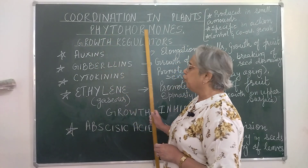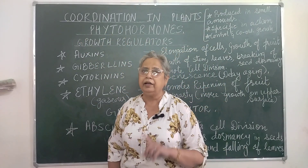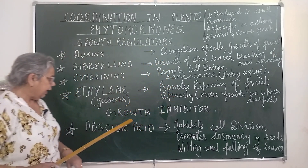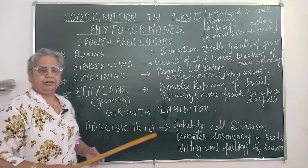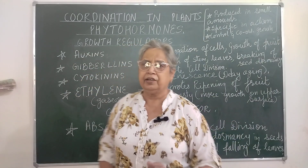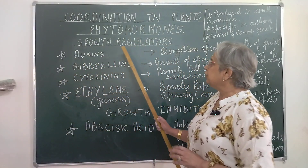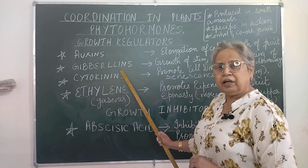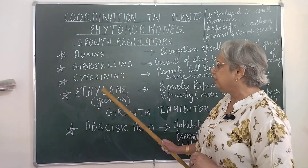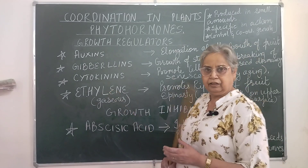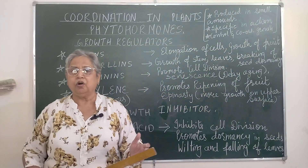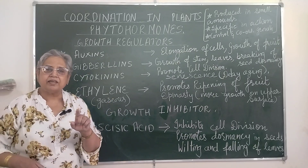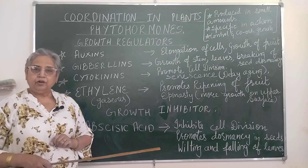Phytohormones are broadly classified into two types: growth regulators and growth inhibitors. In growth-related hormones which regulate growth, number one is auxin, then there are gibberellins, then there are cytokinins, and then there is ethylene. Of all the hormones, ethylene is the only hormone which is gaseous in nature.